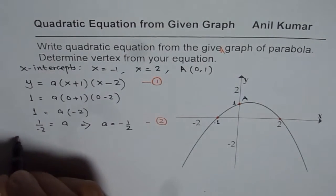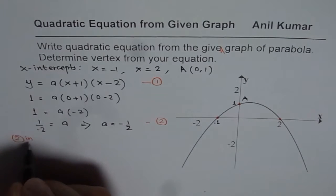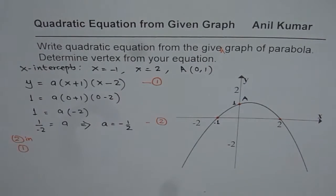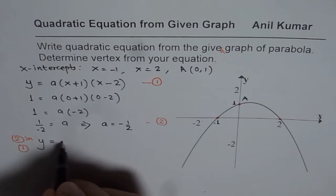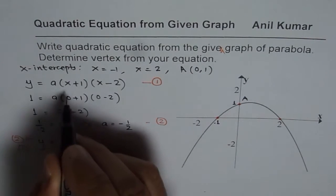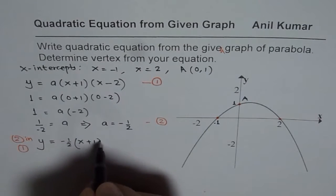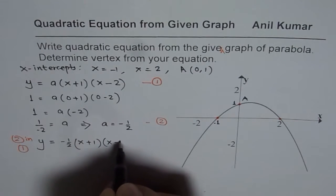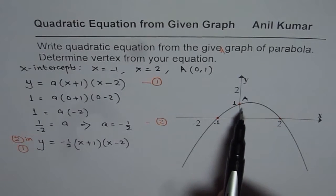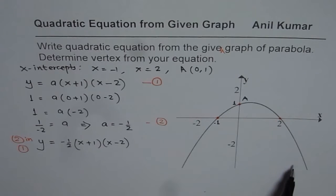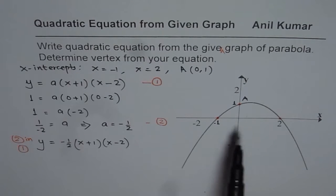We will substitute two in one. So we will substitute two in one and then write down the equation, which is y equals minus half x plus one times x minus two. So that is how we get our equation. Minus half, minus indicates that the parabola opens downwards. And half indicates that it is vertically compressed. So it looks wider.